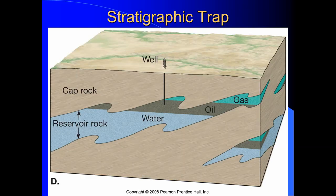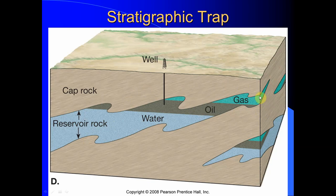Our last trap is a stratigraphic trap. We have cap rocks above and below, and our reservoir rock gets thinner and thinner laterally until it eventually disappears. This creates a natural pocket for the oil and natural gas to become trapped under. So these four traps — anticline, fault, salt dome, and stratigraphic — are the right geologic conditions needed to trap and concentrate oil and natural gas in the subsurface.